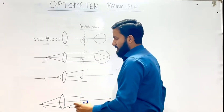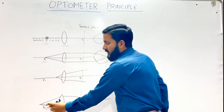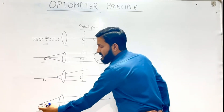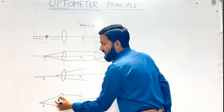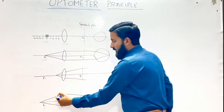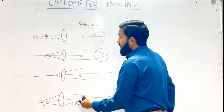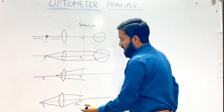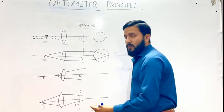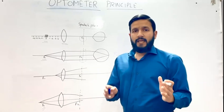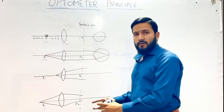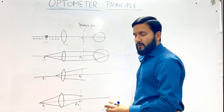In the third case, the target is at a point outside the first principal focus of the convex lens. The light rays arriving at the spectacle plane will be converging, simulating a convex lens. This is the case of hypermetropia.